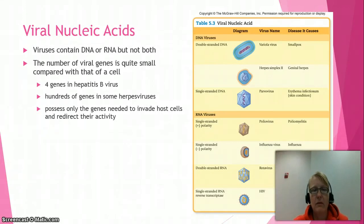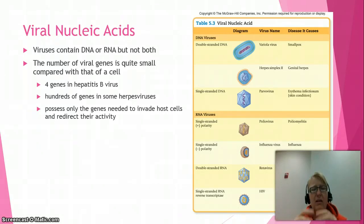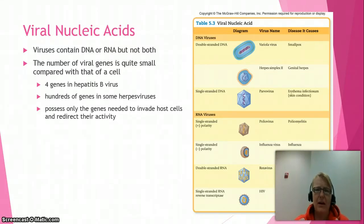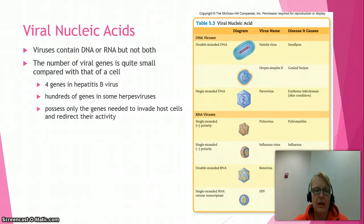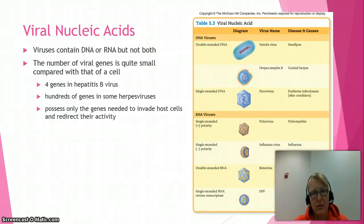Viral nucleic acids come in two types: DNA and RNA. There's double-stranded DNA and single-stranded DNA, and there's single-stranded RNA and double-stranded RNA. Double-stranded RNA is unusual — our cells don't typically have that, but viruses do. Make sure you understand the different groups on this slide; you don't need to memorize the examples, but know what the groups are and how they differ. In single-stranded RNA, there are two types of polarity: positive polarity, where the RNA can be read directly and made into proteins upon entering the host cell, and negative polarity, where the complement of that sequence must be made first before proteins can be produced.